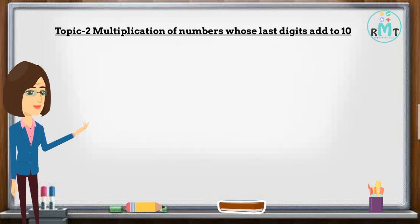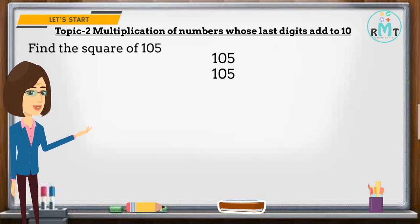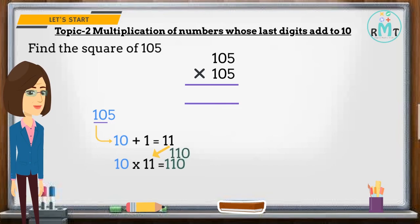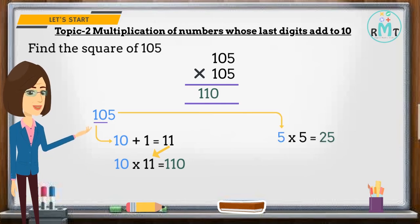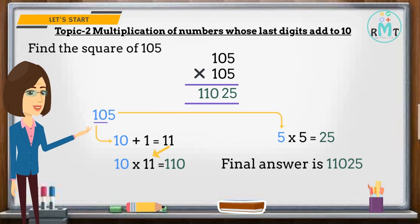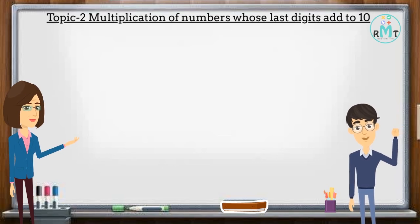Find the square of 105. Apart from 5, the digits are 1 and 0, that is 10. After 10 comes 11. We multiply 10 with 11 and write the answer as 110. We multiply the last digits 5 by 5 and put 25 on the right side. Final answer is 11025.